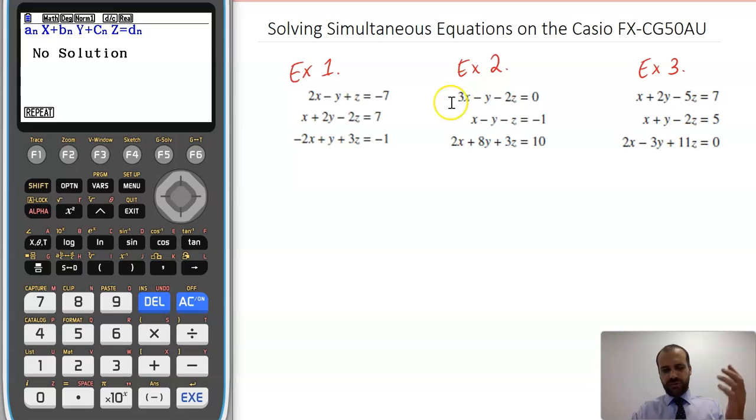All right, so geometrically, these three planes do not meet at a line or at a point. Now, example 3 is important, because I can tell you this one met in a point. This one doesn't meet at all, so you can probably guess this one should meet in a line.